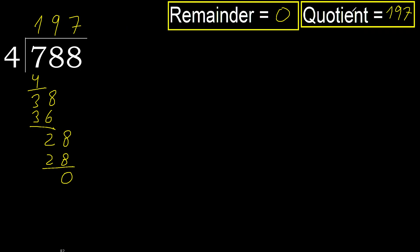Ok, remainder 0. Therefore 788 divided by 4 is here — the answer is 197.